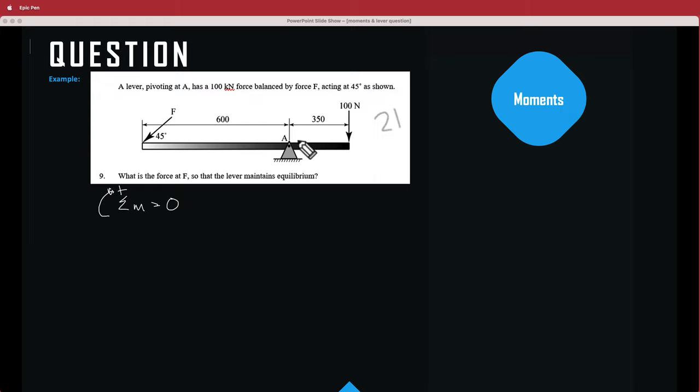And then we are going to have our values here for moments, and because it's balanced it's going to equal to 0. So now we know that the force times the distance to the pivot is going to give us this side over here. So we'll start with this side. I'm going to have 100 times 350, and then now I'm going to go on to the other side. Because this is pushing down and it's going the opposite way, it's going to give us a negative value, so it's going to be negative F times 600 is equal to 0.